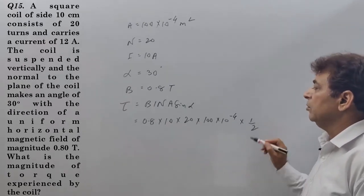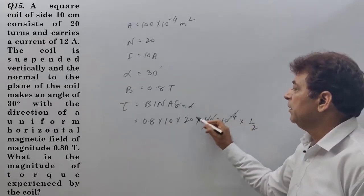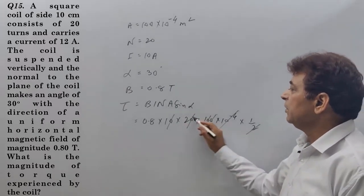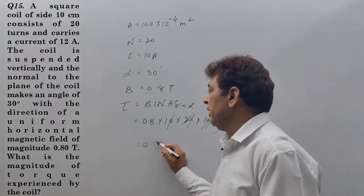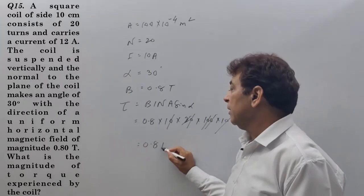1 by 2. 10 to the power minus 4. All the zeros cancel. 2 and 2 cancel. 0.8. Torque is calculated. The unit is Newton meter.